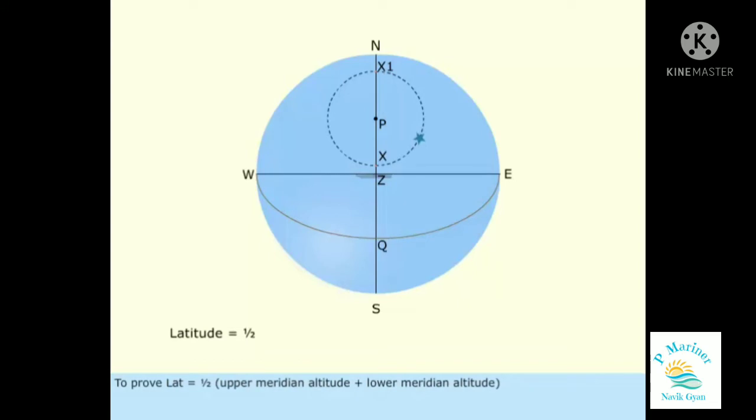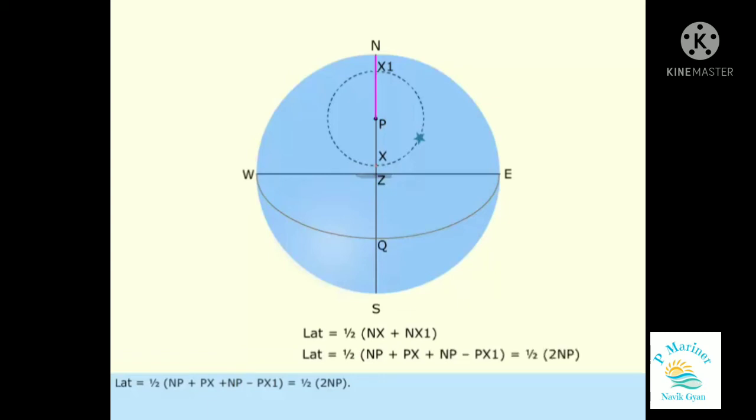To prove latitude equals one half upper meridian altitude plus lower meridian altitude. In this case, latitude equals one half 16 degrees plus 84 degrees, which equals 50 degrees. Latitude equals one half NX plus NX1. Latitude equals one half NP plus PX plus NP minus PX1 equals one half 2NP. Or, latitude ZQ equals NP.